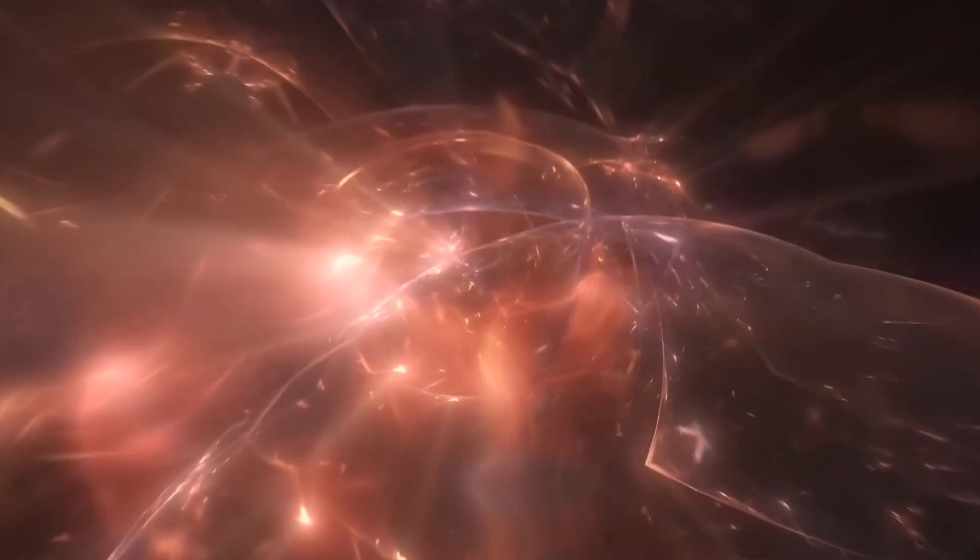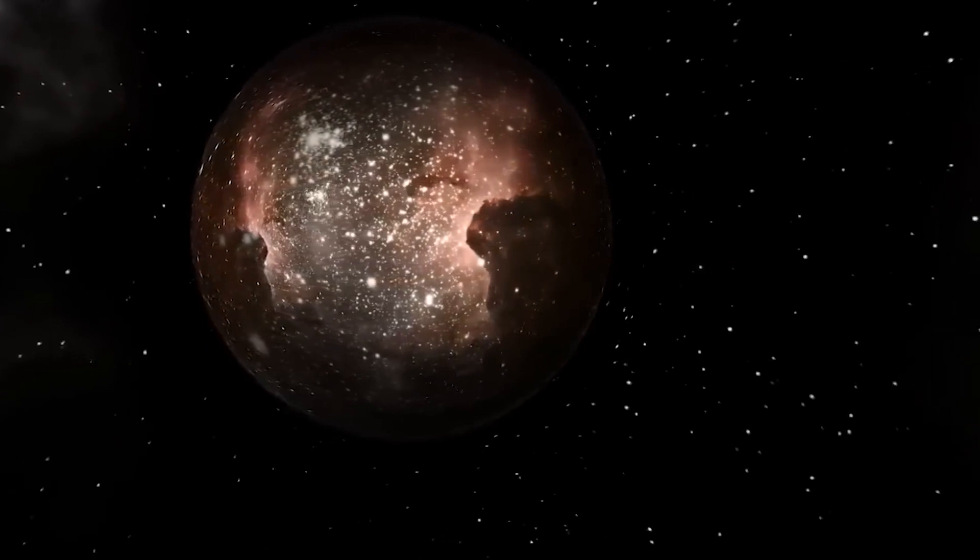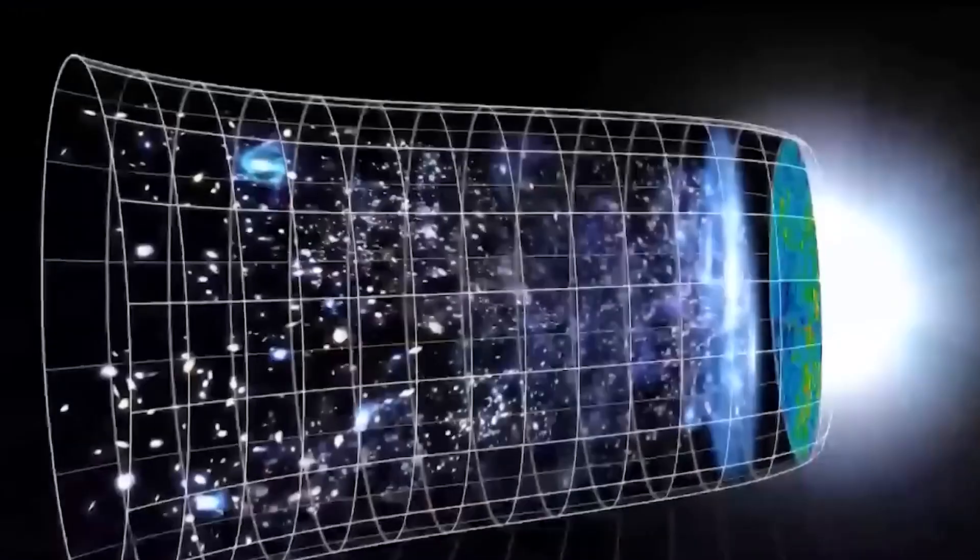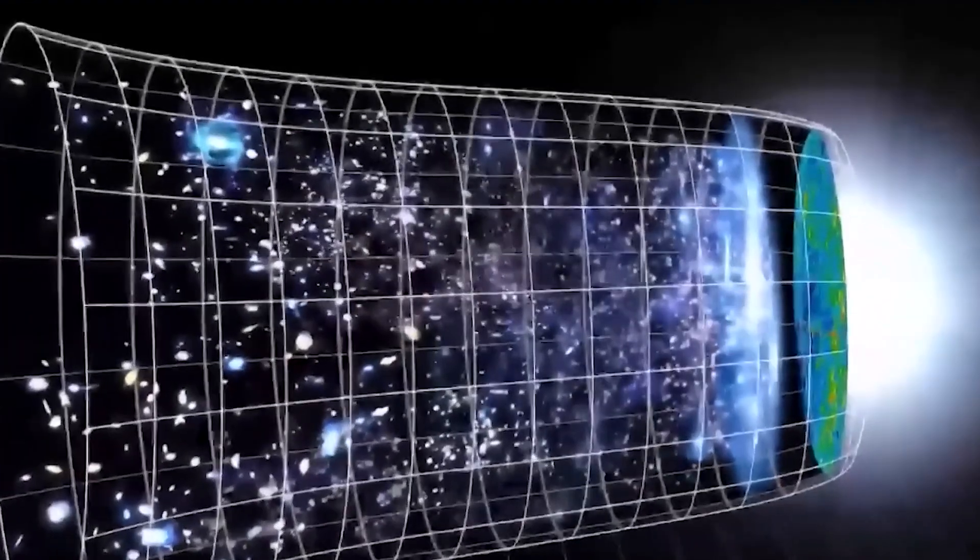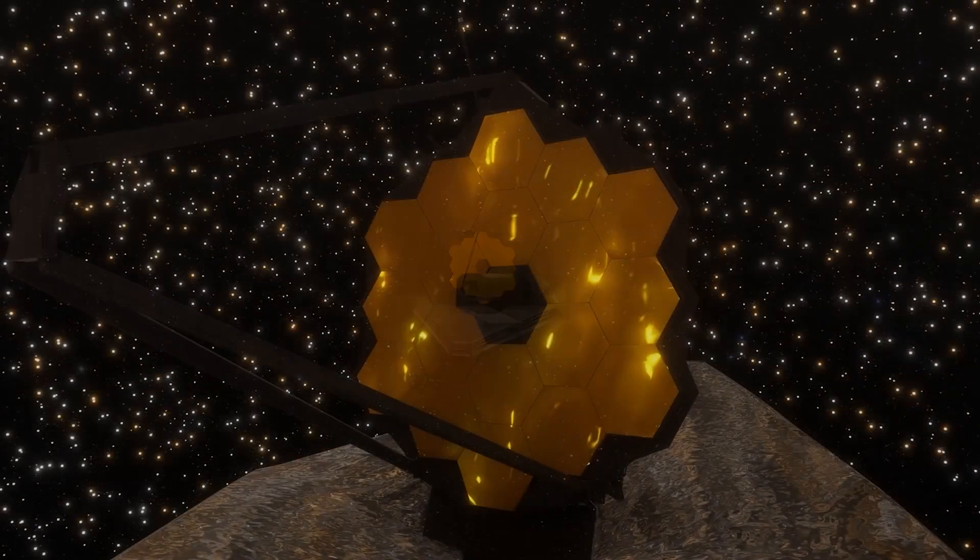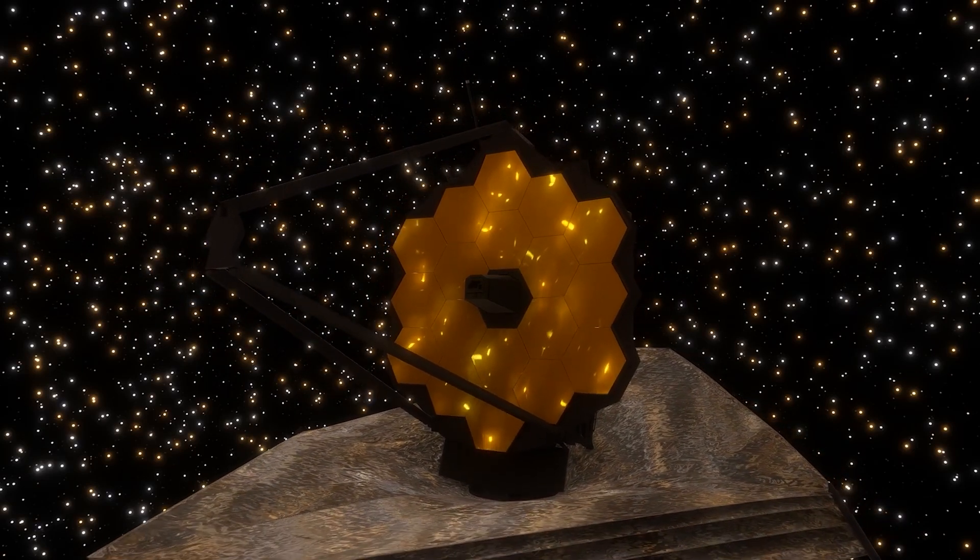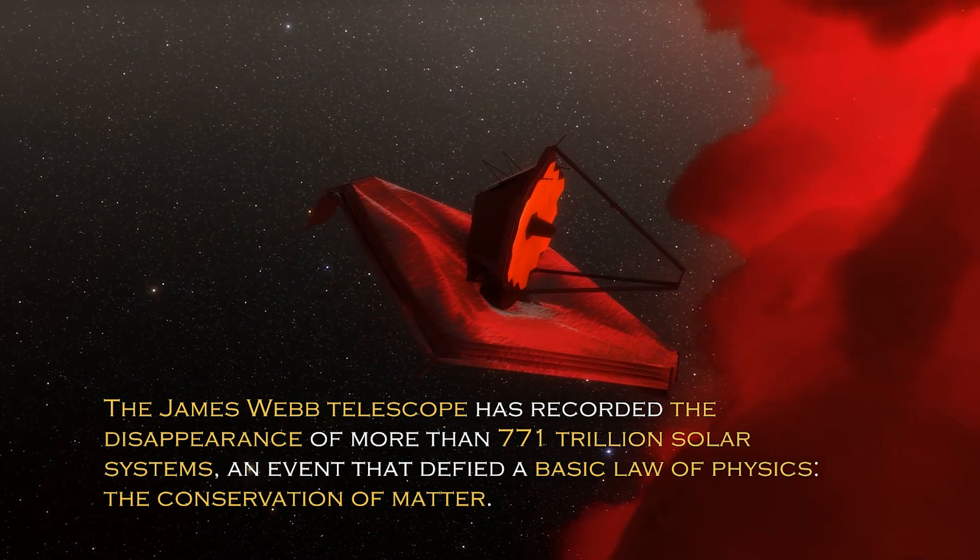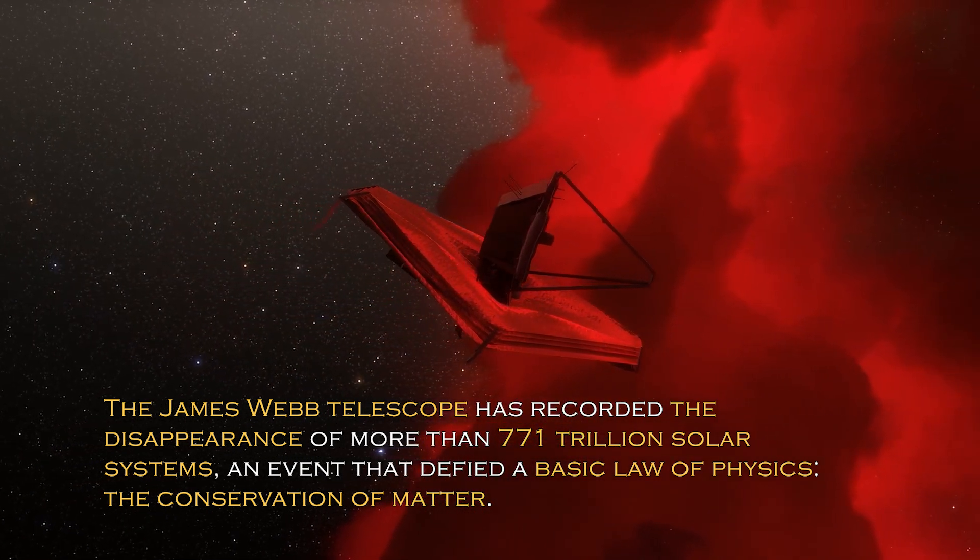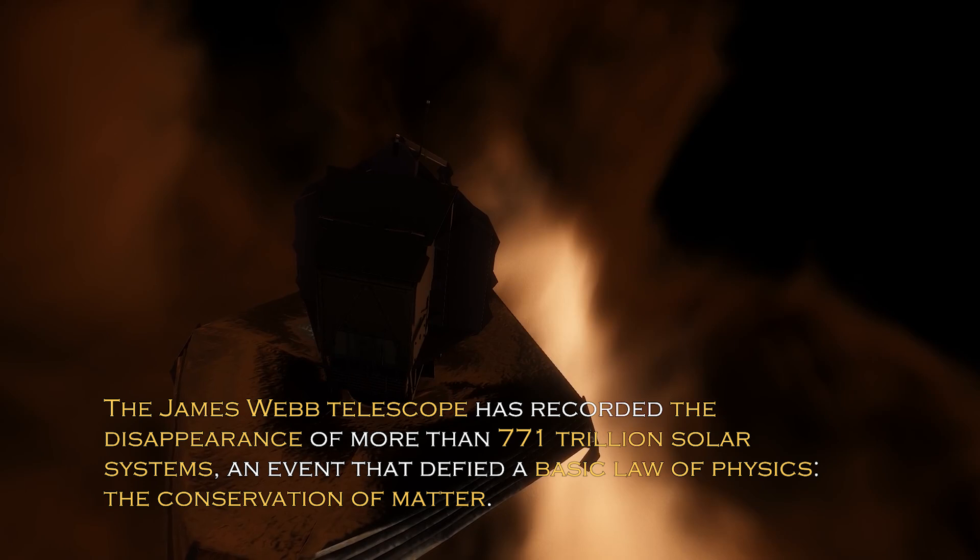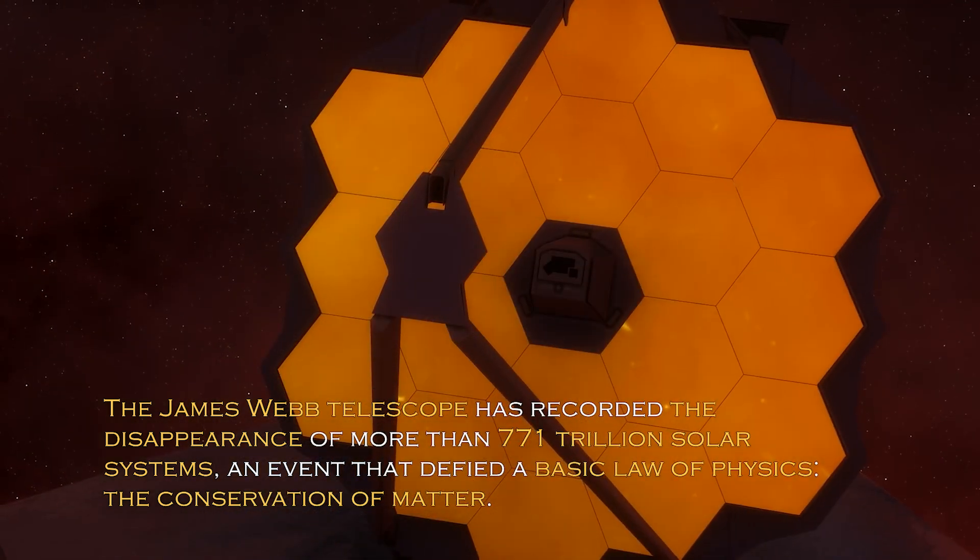The impact of the discovery significantly challenged our established understanding of cosmology and astronomy. It reveals a situation that could call into question the validity of the Big Bang theory. What exactly did the James Webb telescope discover and why is its finding creating such a shock to the foundation of cosmology and astronomy? The James Webb telescope has recorded the disappearance of more than 771 trillion solar systems, an event that defied a basic law of physics, the conservation of matter.